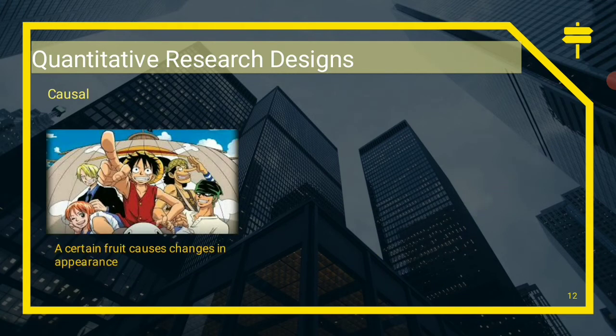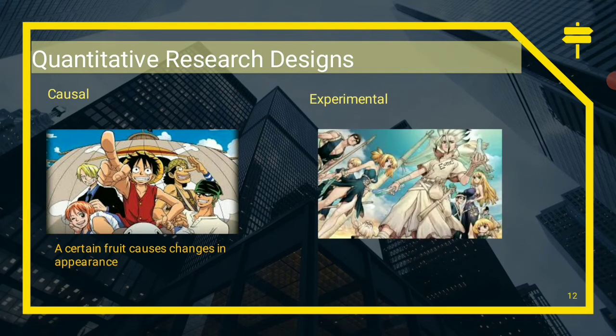For causal design, a certain variable — such as a fruit — is responsible for a change in another variable, establishing causality as an interpretation of a certain problem or paradigm. Experimental designs are more rigid and used in life and natural sciences, confined to laboratory settings. Quasi-experimental research involves intervening groups and group analysis.